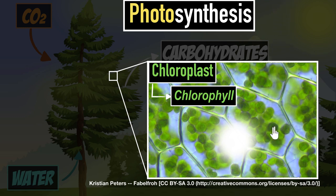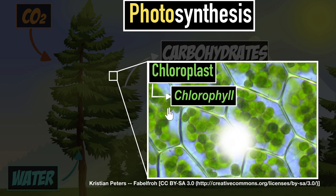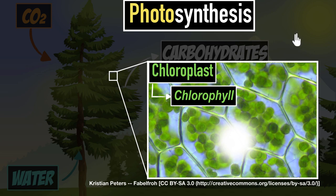Before we dive into the chloroplast to see exactly how this chemical reaction happens, let me share a couple of things I used to get confused about. First, because we see plants throwing out oxygen, I thought they don't need oxygen. Turns out that's wrong — even plants need oxygen, just like we do, and we'll talk more about this in respiration videos. So why do they throw it out? During photosynthesis they create a lot of oxygen, so they keep what they want and throw out the rest — which is what we're breathing right now.